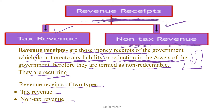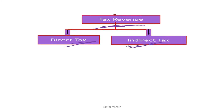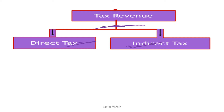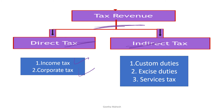Let us discuss this one in detail. Tax revenue is of two types: direct tax and indirect tax. A good example of direct tax is income tax and corporate tax. For indirect tax, good examples are custom duties, excise duties, and service taxes.